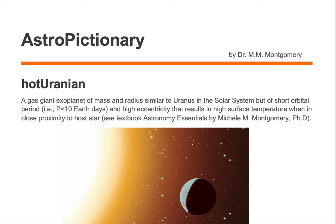A hot Uranian is a gas giant exoplanet of mass and radius similar to Uranus in the solar system, but of short orbital period — i.e., less than 10 Earth days — and high eccentricity that results in high surface temperature when in close proximity to its host star.